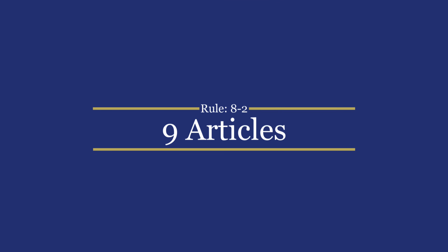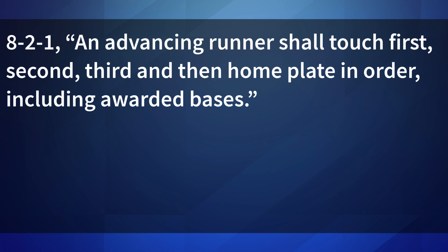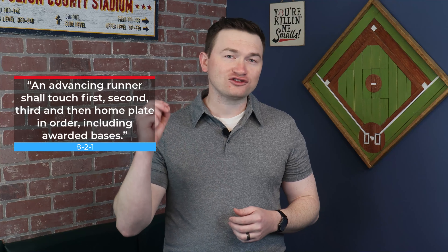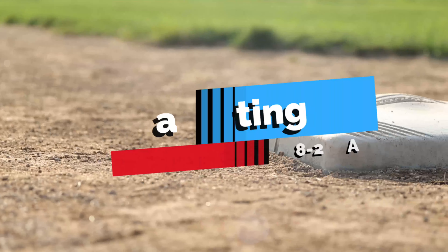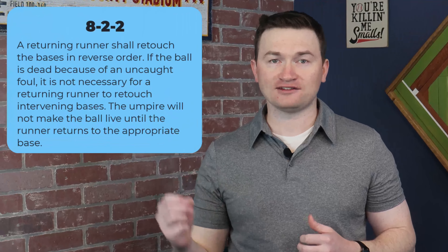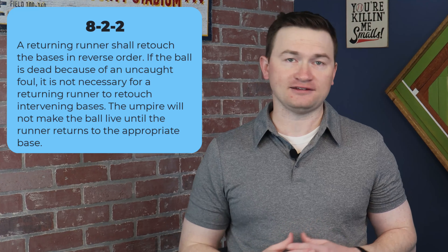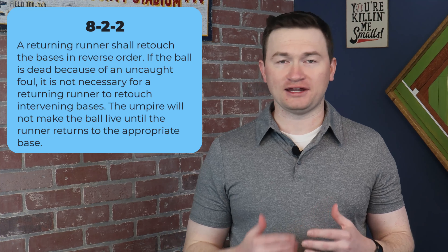There are nine articles to the rule that have varying levels of complexity. To start, 8-2-1: an advancing runner shall touch first, second, third, and then home plate in order, including awarded bases. That may be one of the most obvious rules in baseball, but we need to stress that awarded bases must still be touched in order. Article 2 simply states that runners must touch the bases in order when returning to a base, with the exception of on a foul ball — they can go directly back to their bag and don't need to retouch.